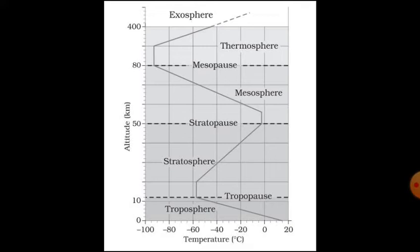Moving on to the next layer that is thermosphere. Above the mesosphere is thermosphere located between 80 and 400 km. As we go higher in the thermosphere, it becomes warmer.